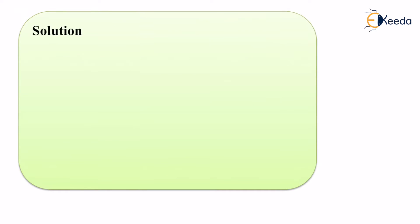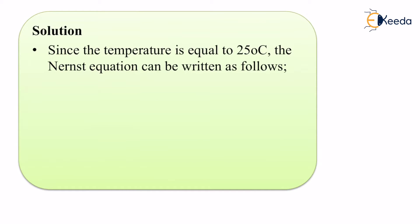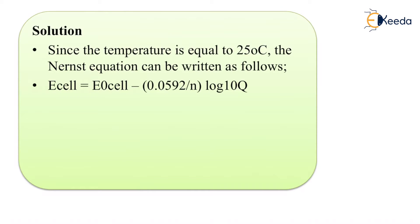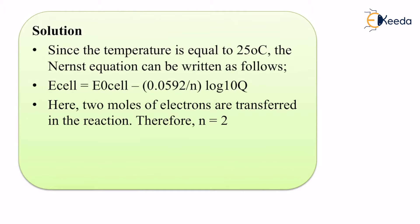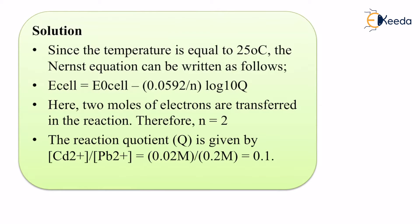Since the temperature is 25°C, the Nernst equation can be written as: E_cell = E°_cell - (0.0592/n) × log Q. Here two moles of electrons are being transferred, so n = 2. The reaction quotient Q = [Cd²⁺]/[Pb²⁺] = 0.02 / 0.2 = 0.1.